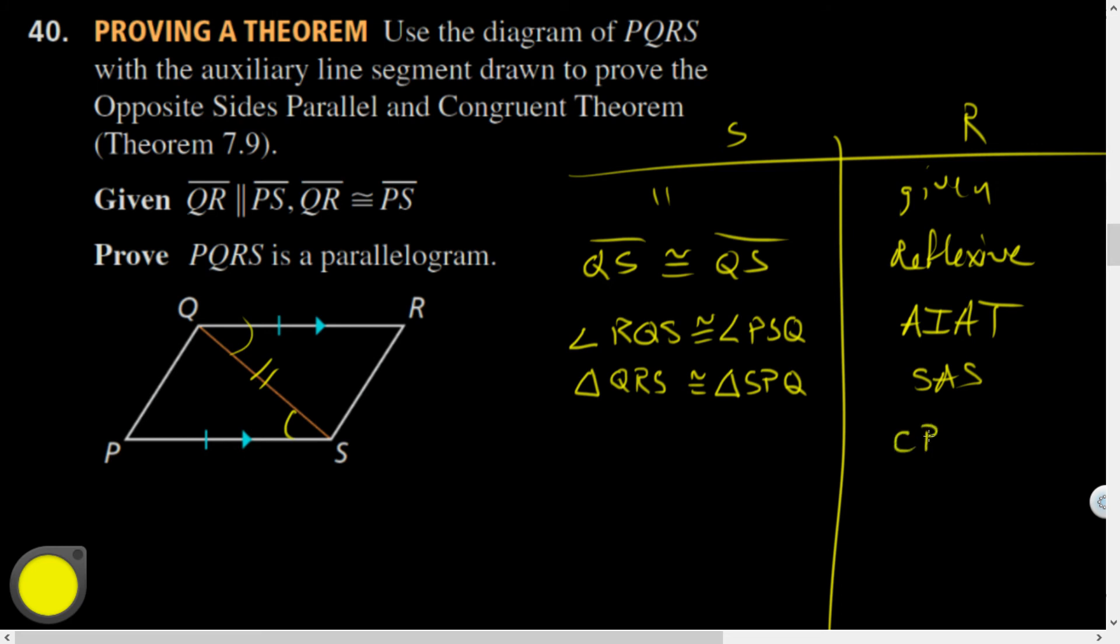I can then use CPCTC, corresponding parts of congruent triangles congruent to say something else that's helpful. Like, for instance, I don't know. I could say that these are congruent or something. So I could say, yeah, Q, P is congruent to R, S, or I guess I'll write S, R. By CPCTC.